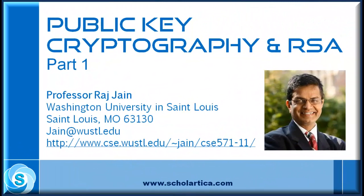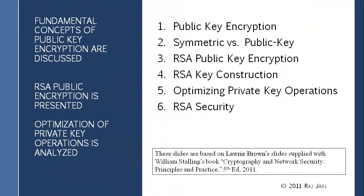We've covered quite a bit of mathematics so far, and the advantage is that we can now apply all of it to public key and RSA and understand everything. In DES and AES, you asked several times why a table is like that and we had no answer. But here the beauty is that everything is mathematically grounded — we have an answer for everything. It does require Galois field concepts, but that's why we taught you Galois fields, the Chinese Remainder Theorem, Fermat's theorem, Euler's theorem — all of that is used. We will talk about public key encryption, then RSA, then how to optimize it and other issues.